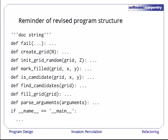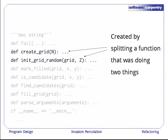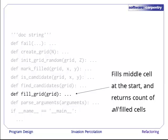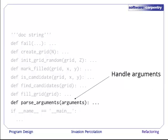And here's the structure of our revised program. We have the documentation string, which, by the way, we've updated to remind people that the first argument is the name of the scenario. Our fail function hasn't changed. We've split grid creation into two functions. Our fillGrid function now fills the middle cell and returns the count of all filled cells. And we have a function to parse command line arguments. This argument parsing function is actually specific to the random case. We should probably rename it to make that clear.